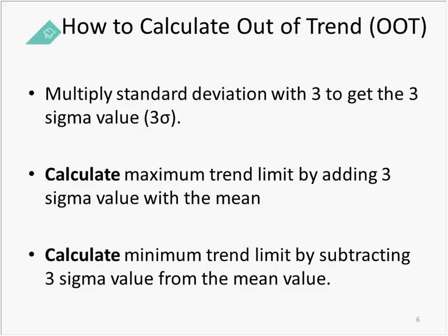Let's talk about how to calculate your out-of-trend results. It is a very simple mathematical equation. You multiply your standard deviation by 3 to get the 3-sigma value. Then you calculate your maximum trend limit by adding that 3-sigma value to the mean — that would be your upper trend limit. To get your lower trend limit, you would subtract that 3-sigma value from your mean.